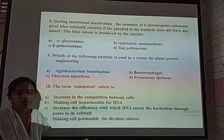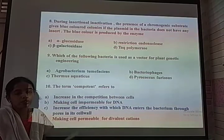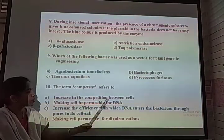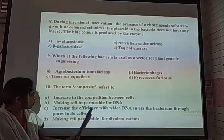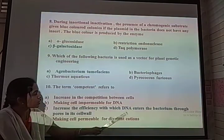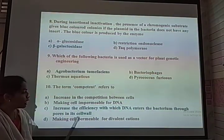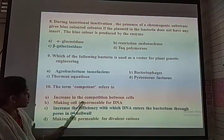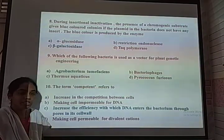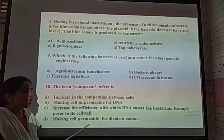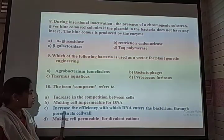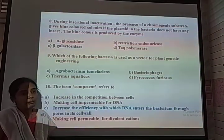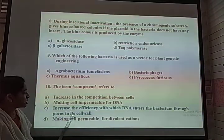The term 'competent' refers to a host used for transforming — it increases the efficiency with which DNA enters the bacterium through its cell wall, making the cell permeable for DNA by treatment with divalent cations. The competent host has specific properties because it is helpful for increasing the efficiency of introduction of rDNA into the host and for multiplication. The correct option is answer C.